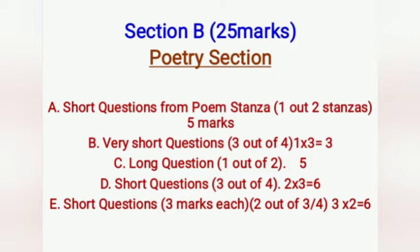From Section B you have 25 marks in total — it is the poetry section. You will get a stanza with two to three questions worth five marks, but you will get two stanzas and you have to attempt only one. Next, there are three short questions for one mark each; you will get four questions but attempt only three. Then a long question worth five marks — you get two questions but attempt only one.